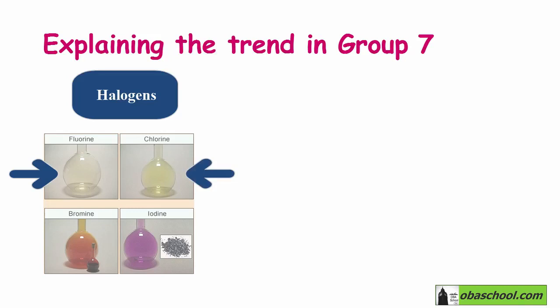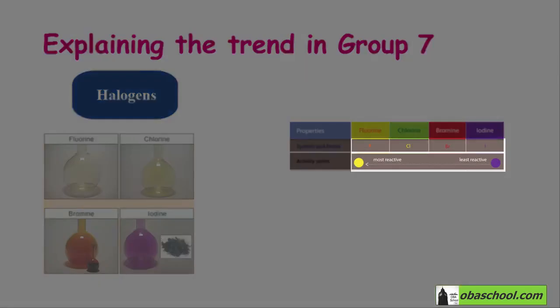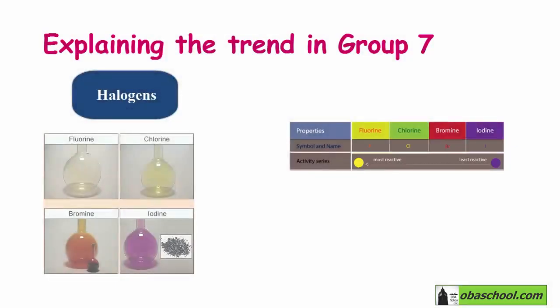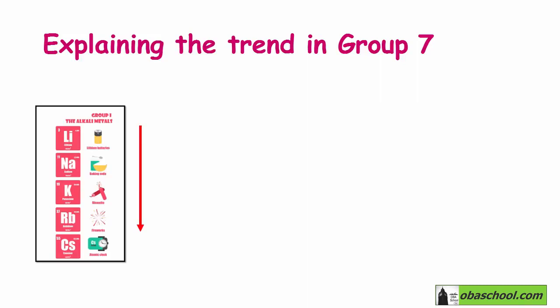We have fluorine, chlorine, bromine, and iodine. Earlier in this section we have mentioned that the reactivity decreases going down Group 7. To explain this we will consider the same factors that we have examined when explaining the trend in Group 1.